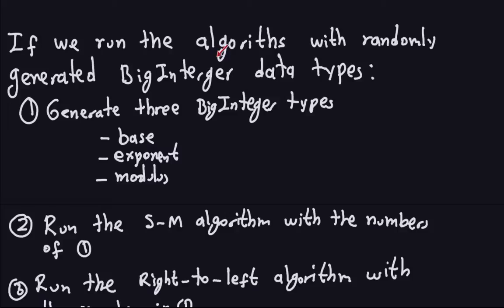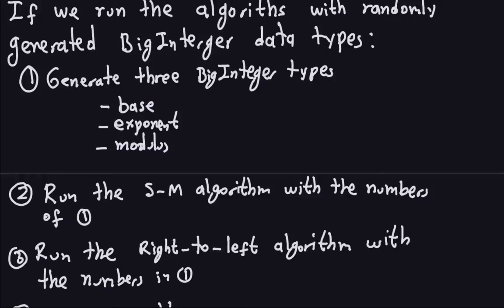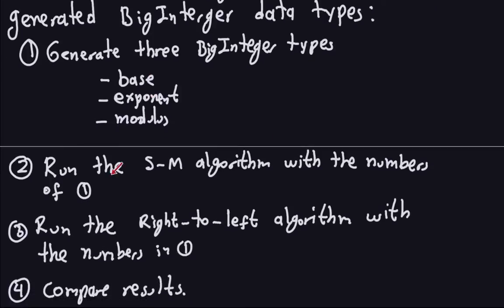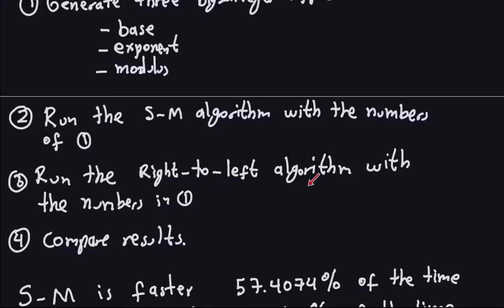We're going to run the algorithms with randomly generated BigInteger types — the BigInteger of Java — and basically what we're going to do is randomly generate a base, exponent, and modulus, then run both algorithms and see which one is faster in each instance. We run the square-multiply algorithm with the randomly generated numbers, then right after that run the right-to-left algorithm with the same numbers, and compare the results. This was done with my Java implementation on my machine, so if you do it on another machine the times may be different.